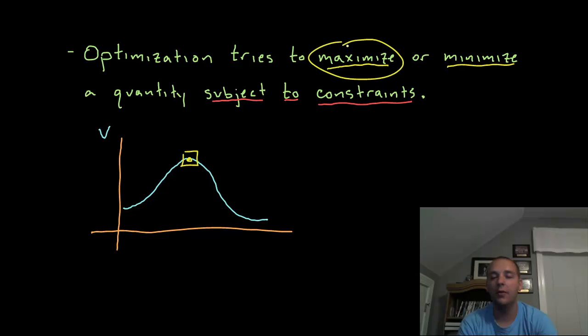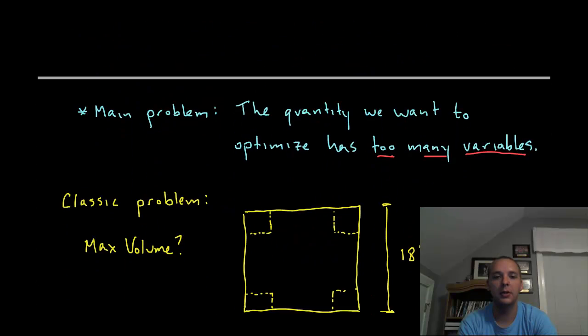But there is one main hang up for all optimization problems. You can open up your calculus book and look at every example in the optimization section and they will all have the same issues. They can be totally different types of examples, but they all have the same main problem.